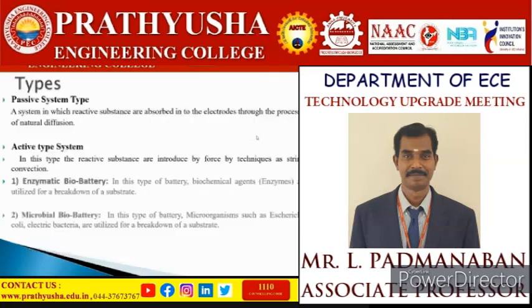When it comes to types, biobatteries are classified into passive types and active types. In a passive type, reactive substances are absorbed into electrodes through natural diffusion. In an active type, reactive substances are introduced by forcing techniques. Within active systems, enzymes are automatically converted into electricity. There are two subtypes: enzymatic biobattery, where biochemical agents called enzymes are utilized for breakdown of a substrate; and microbial biobattery, where microorganisms such as E. coli and electric bacteria are used for the breakdown of a substrate.